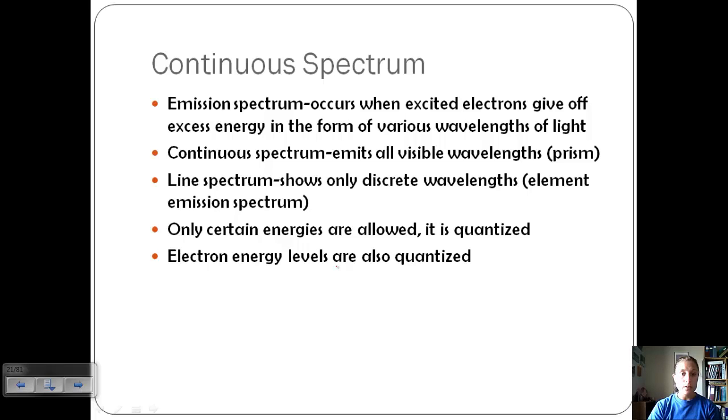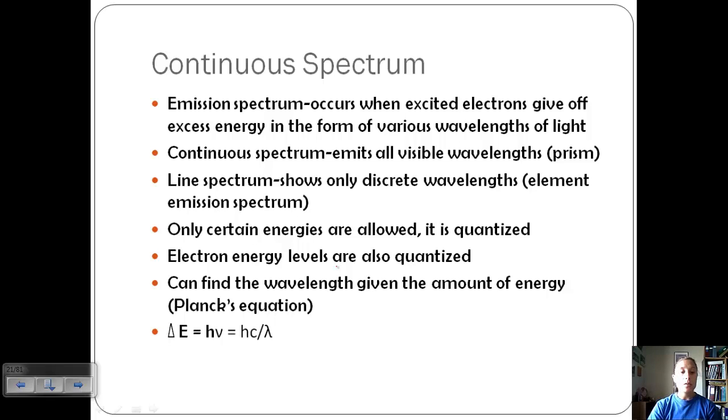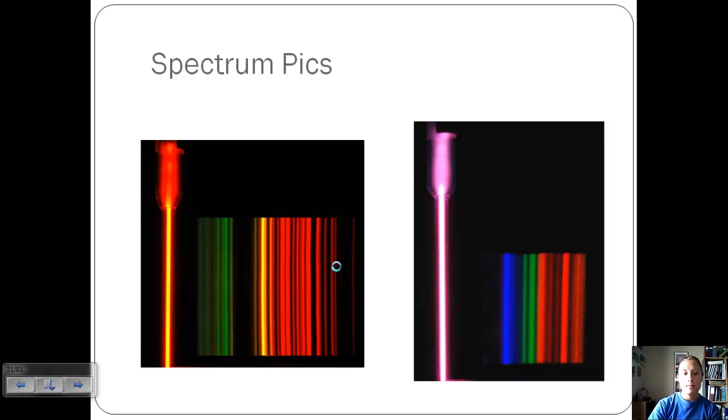Electron energy levels are also quantized. Electrons are going to jump these specific levels. We can find the wavelength given the amount of energy and this is called Planck's equation. The change in energy is equal to H times V, which is our frequency, which is equal to H times the speed of light divided by wavelength. We've done this lab before where we excite the electrons for a certain element and we see these discrete wavelengths of light. We can actually use these to identify types of elements and this is what's also used to identify elements present in stars using really powerful spectroscopes.